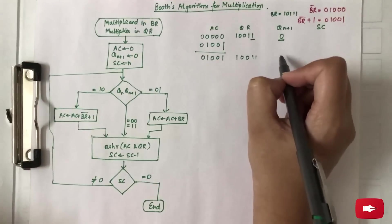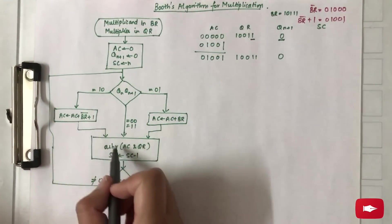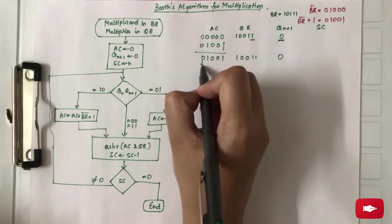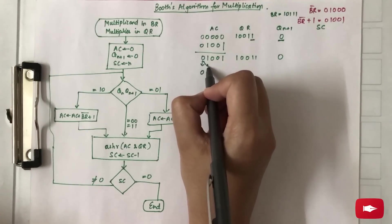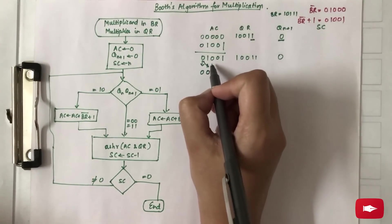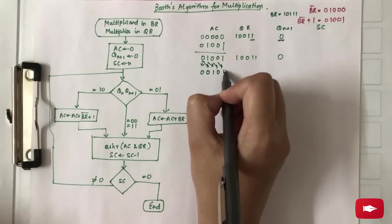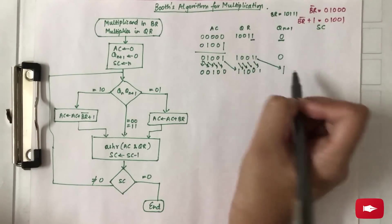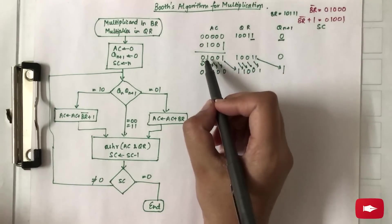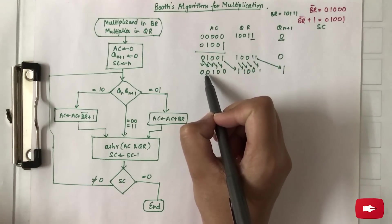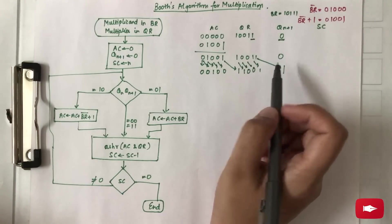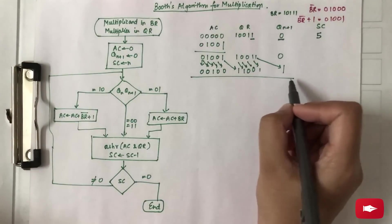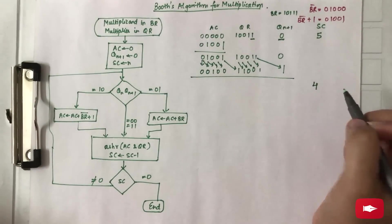Writing Q_R again, we now perform the arithmetic shift right. The first bit is written the same — it is copied to the second position, and then the remaining bits shift right: 1, 0, 0, 1, and this last one goes here. So the first bit is copied to both the first and second positions, and then normal shifting is done. After this, the first step is completed and the sequence counter is decremented by 1.